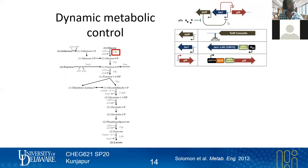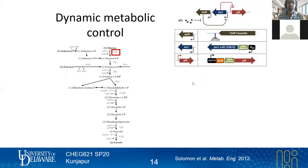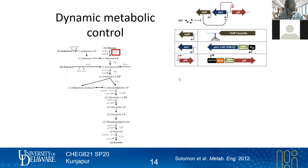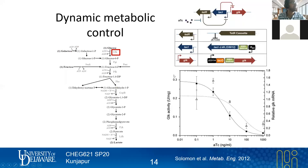This inverter strategy is broadly applicable — you can swap GLK with any gene of interest to get an inversion phenotype, meaning you add something and turn a target gene off. Kevin Solomon, now a professor at Purdue, initially tried a different strategy involving antisense RNA: transcribing RNA exactly complementary to the GLK mRNA, so any RNA being made pairs with its antisense complement, creating a complex that cannot be translated. Ultimately, the inverter approach worked better.